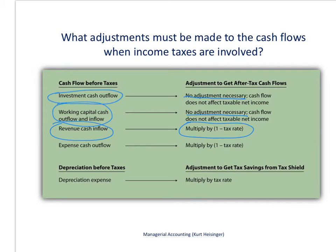The same adjustment is needed for expense cash outflows. We multiply expenses by one minus the tax rate, because there is actually a tax benefit to paying expenses, so the true cash outflow is something less. Using the same 40% tax rate example, we would multiply the expense cash outflow by 1 minus 0.4, or 0.6, to get the true cash outflow.